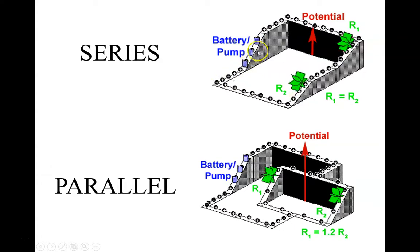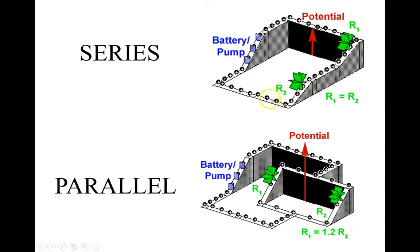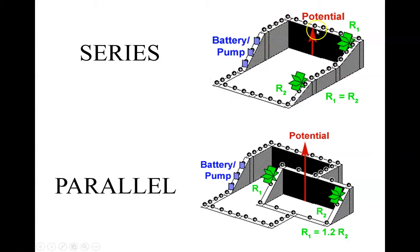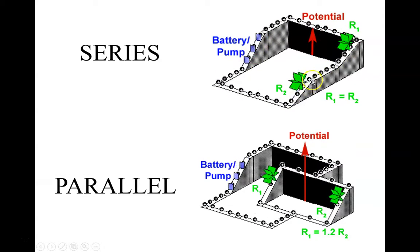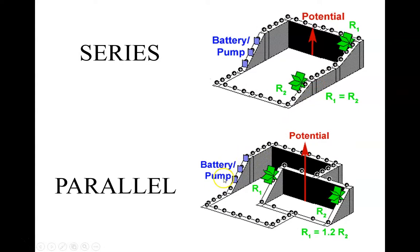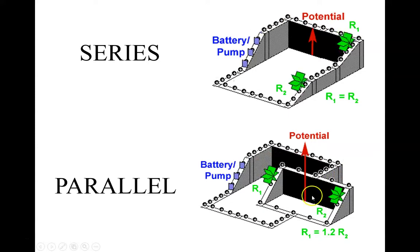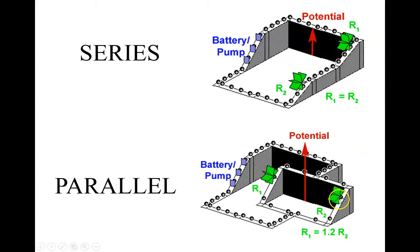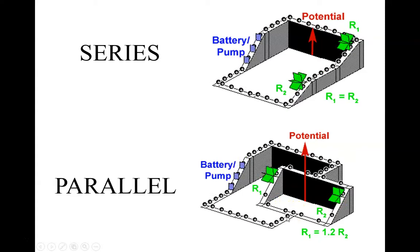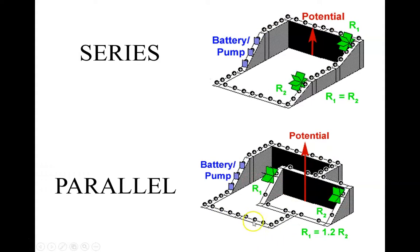If I follow one of these positive charges, I go through one resistor and then the next. Every electron goes through the battery and through both resistors, so the current is the same everywhere. Whereas in parallel, all the current exits the battery and then splits - some goes down the first resistor and some goes down the next. These two currents add up to be whatever the current is entering the back of the battery.